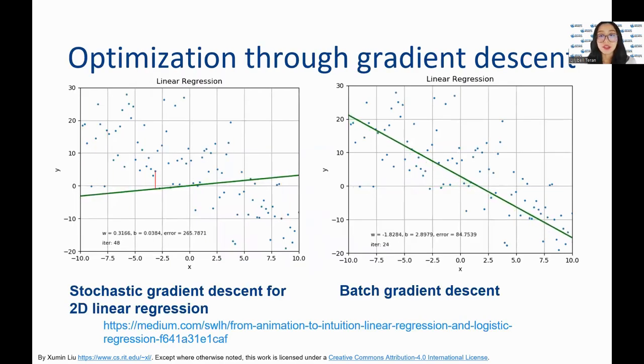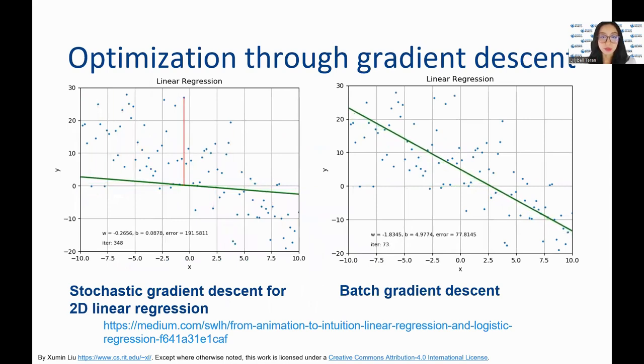The left figure shows stochastic gradient descent process where only one data point is used in each iteration to compute the gradient. The right figure shows batch gradient descent where a batch of data points are used in each iteration to compute the gradient.